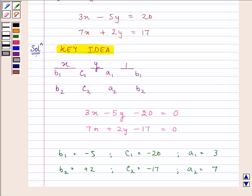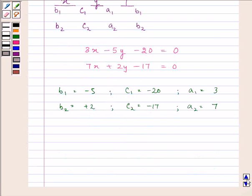All right. Now, on substituting the values of B1, B2, C1, C2, and A1, A2 in the above given pattern, we have X, minus 5, 2, minus 20, minus 17, 3, 7, and then again, minus 5 and 2.